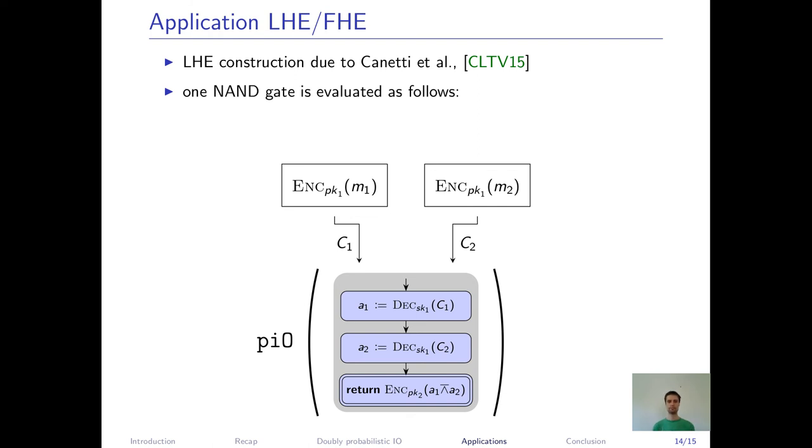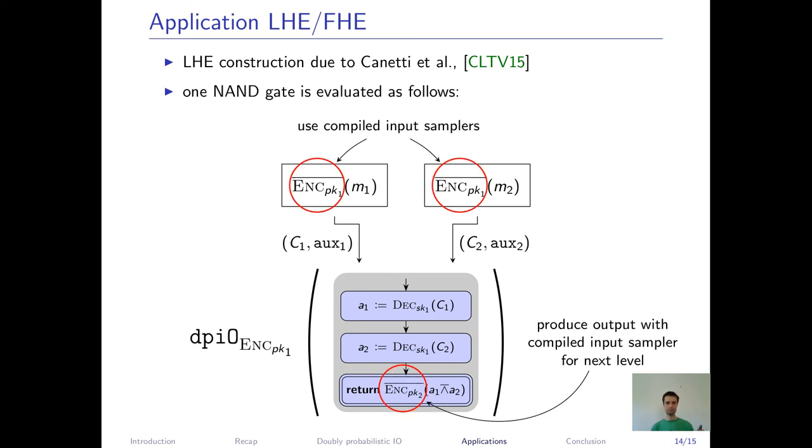So we now adapt this construction using our DPIO framework and highlight the key differences. So what do we need to change? We need to replace the input distributions, so the ciphertext distribution, with the compiled input samplers to make sure that these inputs are sparsifiable with the ELF. Additionally, the obfuscated circuit does not just encrypt the NAND result directly, but also uses the compiled input sampler, just for the next level. Like this, we can make sure that our sparsification procedure works also for multiple levels.